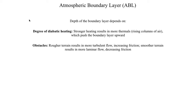Another thing that influences the depth of the boundary layer is the terrain itself. If you've got an area of really rough terrain — maybe there are a lot of mountains, hills, trees, or it's a highly urbanized area — that will tend to give you a deeper boundary layer, because that results in more turbulent flow especially down near the surface. But if you've got a really smooth landscape, like somewhere in the plains where it's all grasslands, or even out over the ocean, you're not going to have as much turbulent flow, so your atmospheric boundary layer will be shallower compared to a landscape with really rough terrain.